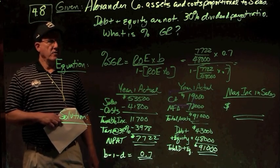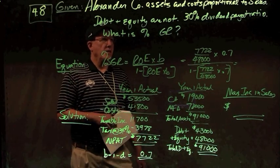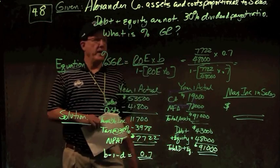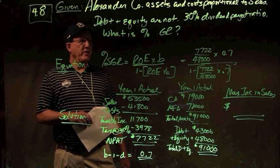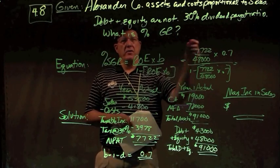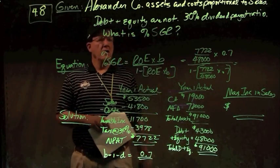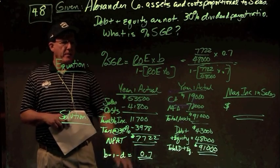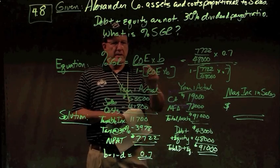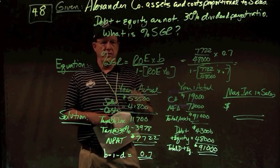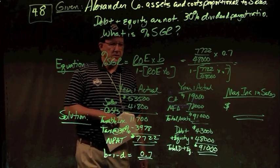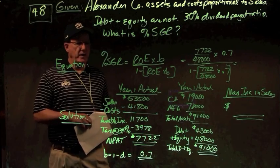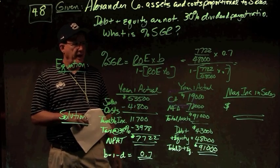In problem number eight, we're given that Alexander Company has assets and costs that are proportional to sales, debt and equity are not. Constant debt to equity ratio, a 30% dividend payout ratio. What is the percent sustainable growth rate? SGR is ROE times B divided by one minus ROE times B, slightly different than the IGR. And in this case, this is the maximum increase in sales without any equity financing, no equity financing allowed. Debt is okay as a plug.